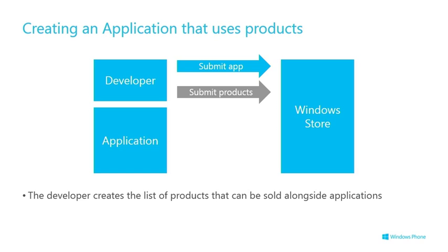You're defining the products in the Dev Center so that they can be bought using the Microsoft Commerce platform via the store infrastructure. The products themselves — what the product means — that's all dictated and controlled by you. If it's digital content, it would be stuff sitting on your own servers or your own infrastructure. At no point does Microsoft, in the Dev Center or in the Windows Phone Store, actually hold digital copies of whatever it is you're selling.